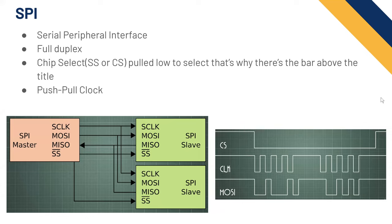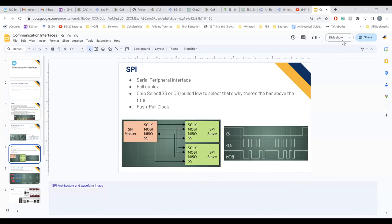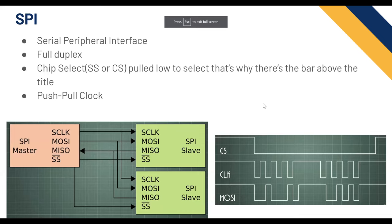Chip select versus addressing makes messages smaller, which improves both speed and power consumption, since you don't have to switch the clock while transmitting an address. You save time and power, but use more board area. It's about what you're trying to optimize.